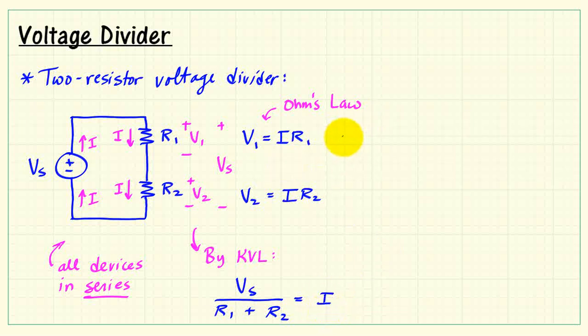Now I'm going to take I and substitute that in to our original expression. And we have, after a bit of rearrangement, the resistor ratio R1 divided by R1 plus R2 times the source voltage VS.